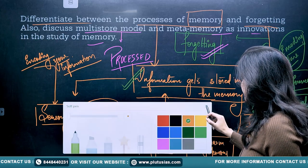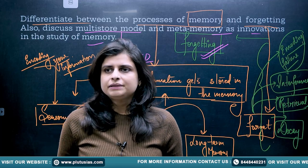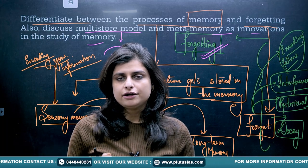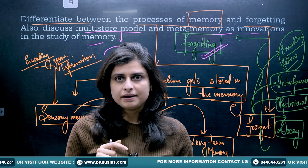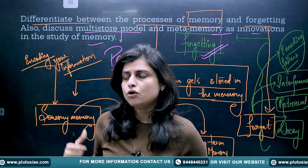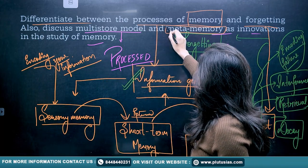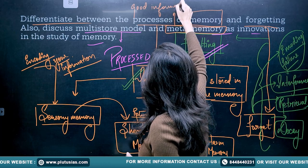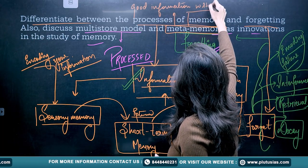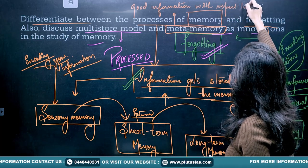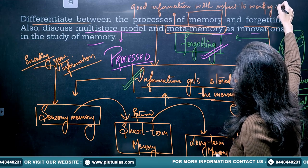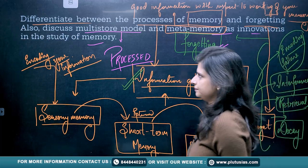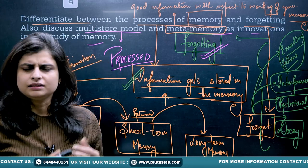Now what I need to go over is meta-memory. There are people with a different kind of aptitude — certain people can remember pictographic images very well, certain people can retain information if it is in the form of mnemonics, etc. In that way, if you have good knowledge about your own memory — that means how you are going to store information — that is called the meta-memory model. In meta-memory, you need to have good information with respect to the working of your memory.